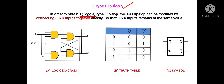Here T stands for toggle. In order to obtain a toggle-type flip-flop, the JK flip-flop can be modified by connecting the J and K inputs together directly, so that J and K always remain at the same value. As seen in the figure, the J and K inputs are joined together by a connecting wire. The common name for these two joined inputs is the T input, meaning toggle input.